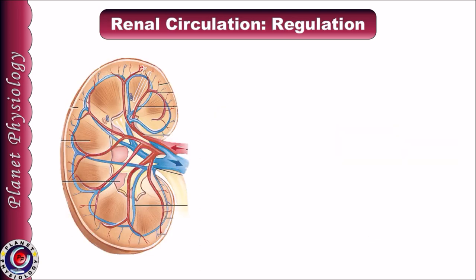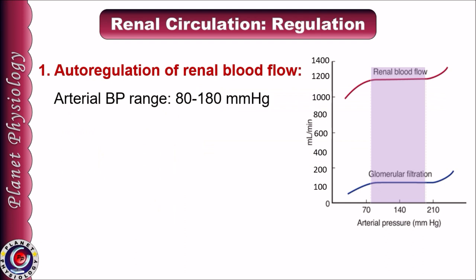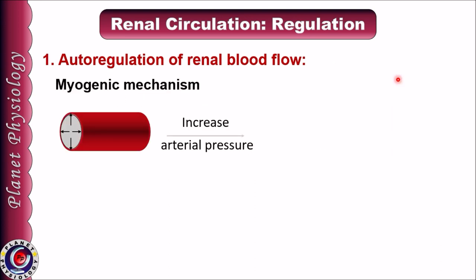Renal blood flow is regulated by three mechanisms: autoregulation, neural regulation, and hormonal regulation. Autoregulation means that in spite of changes in arterial blood pressure, blood flow to the kidneys remains constant. Mean arterial blood pressure can range between 80 to 180 mmHg, but in spite of these fluctuations, renal blood flow will be maintained at 1200 ml per minute. This is achieved by two mechanisms: the myogenic mechanism and the tubuloglomerular feedback mechanism.